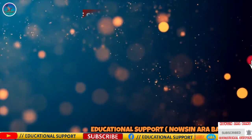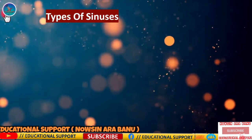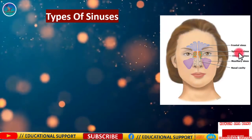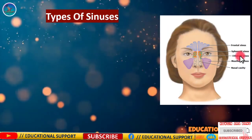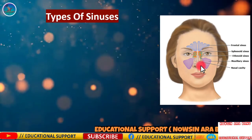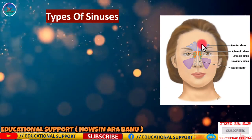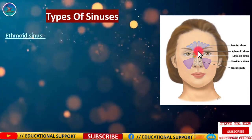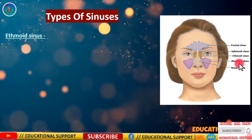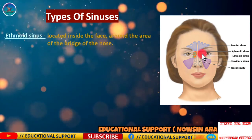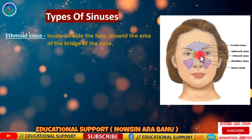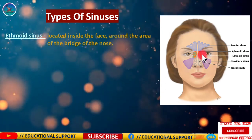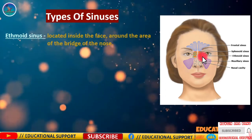There are four different types of sinuses: ethmoid sinuses, maxillary sinuses, frontal sinuses, and sphenoid sinuses. The ethmoid sinuses are located inside the face around the area of the bridge of the nose and are present at birth, continuing to grow.